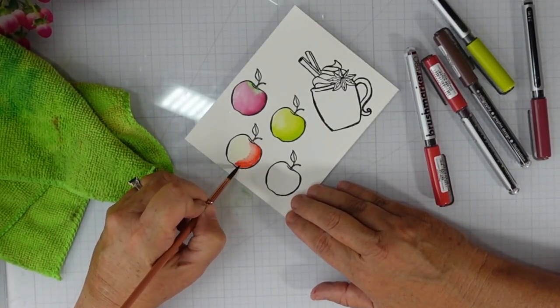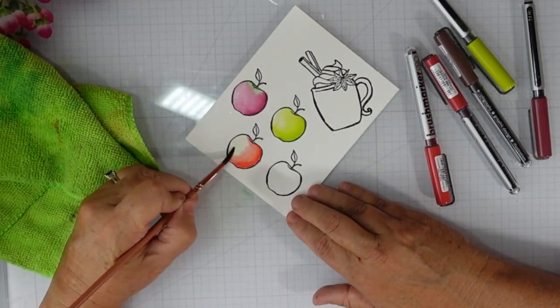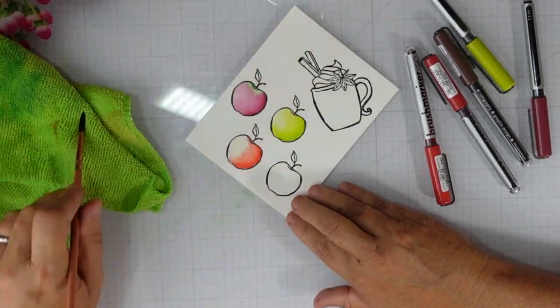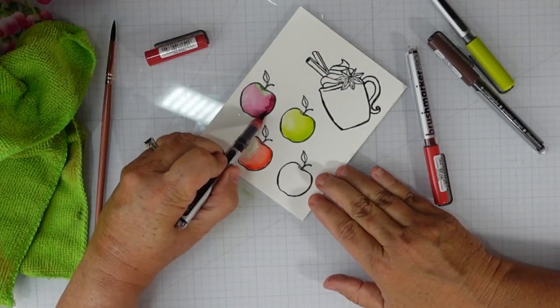It's going to create a light source, so my shadowing is on the right hand side of the apple and the light is hitting it on the left hand side.